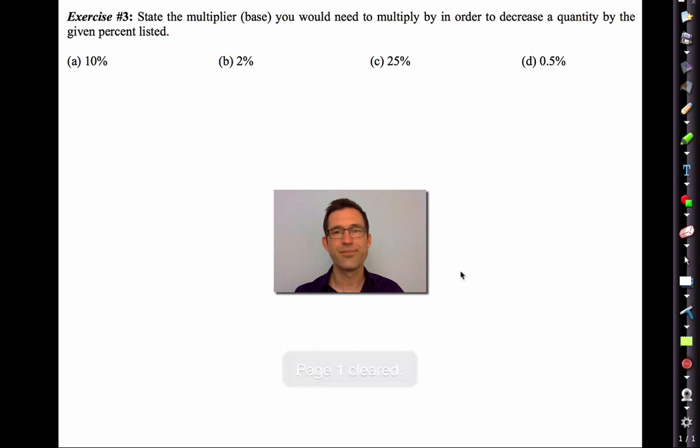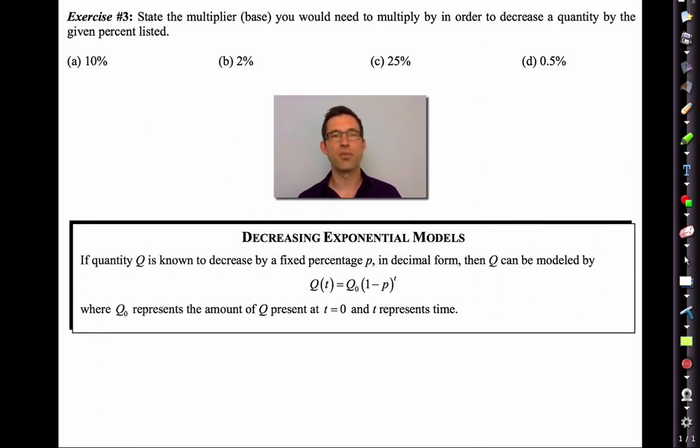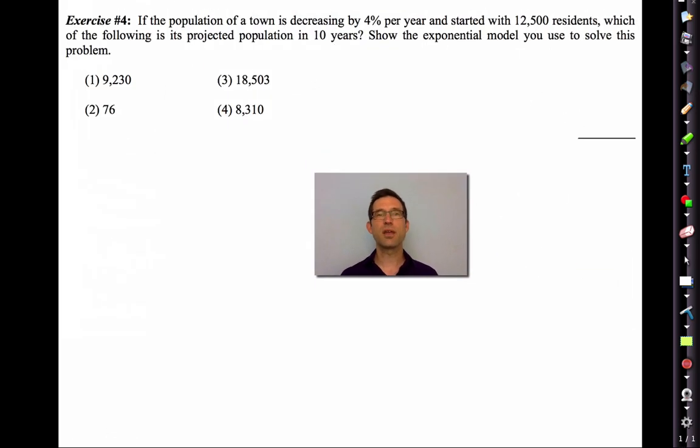Decreasing exponential models. If a quantity Q is known to decrease by a fixed percent P in decimal form, then Q can be calculated this way. So this is exactly what we had before. The difference is for increasing, we have 1 plus P to the T, and for decreasing, we have 1 minus P to the T. Besides that, they are identical.